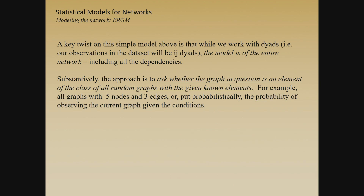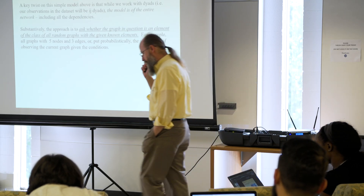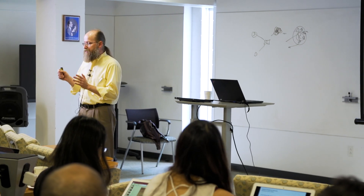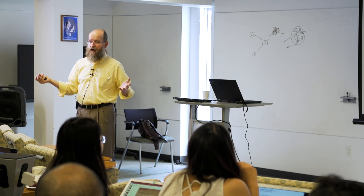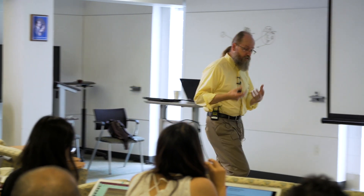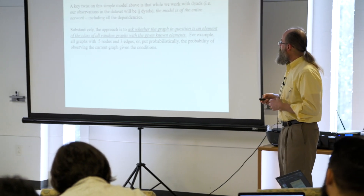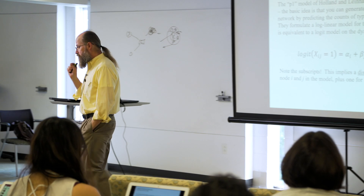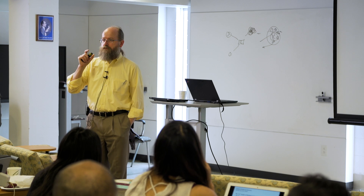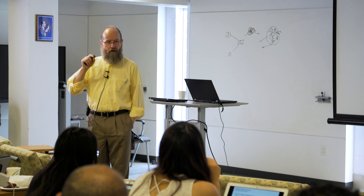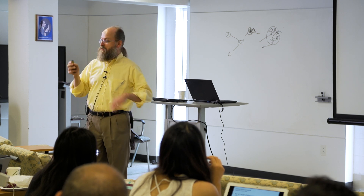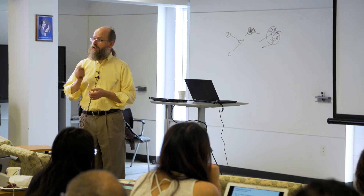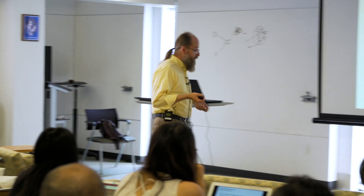A key twist is that while we work with dyads, the model is really of the entire network. Going back to what I said at the start: because we have the population, not a sample of dyads, that network is one draw from the universe of possible networks with our characteristic features. Our task as analysts is to figure out what those features are. We want to ask whether the observed graph is an element of the class of all possible graphs, and we can do that using this logit model framework.